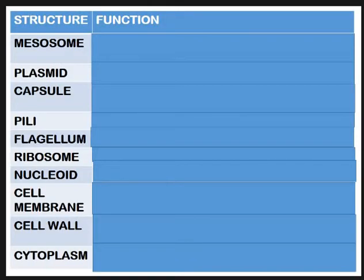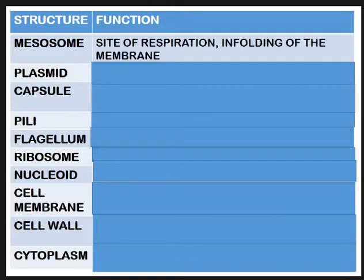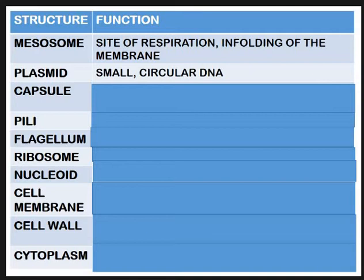Let's run through those answers. The mesosome is the site of respiration - it's the inner folding of the cell membrane, which increases the surface area. Then the plasmid is a small, circular ring of DNA found in bacterial cells. It's where you'll find your antibiotic resistance genes.